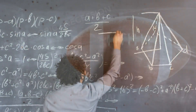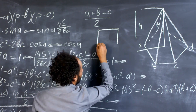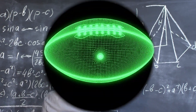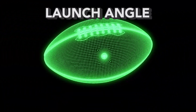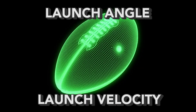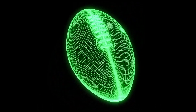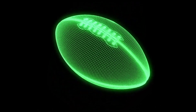Looking back to some basic physics classes, we can understand that the way a football flies depends on the launch angle and the speed it's thrown at. However, you can throw a football as hard as you want — that doesn't guarantee that it will fly in a perfect spiral.